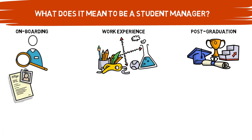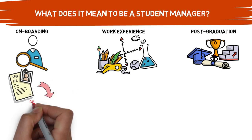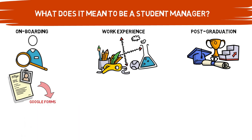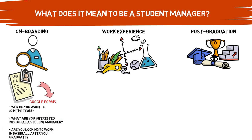The onboarding process doesn't have to be a long and drawn-out process. For the most part, taking a quick look at a resume and having one sit-down interview is going to be enough. To collect candidates, I simply put together a Google form for students to fill out with some of their information, their resume, and a few questions, and then I sent it out on our team's Twitter account. These questions weren't designed to weed candidates out — they were designed for me to see what reason they wanted to get involved. I asked things like, what do you want to do as a student manager? Do you want to work in baseball once you graduate? These give me a better idea of who that person is so I can group individuals with similar interests and tailor their experience to their preferences.